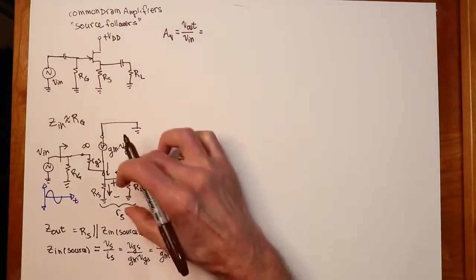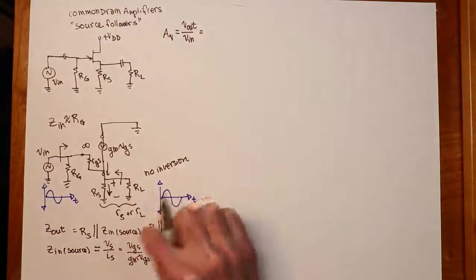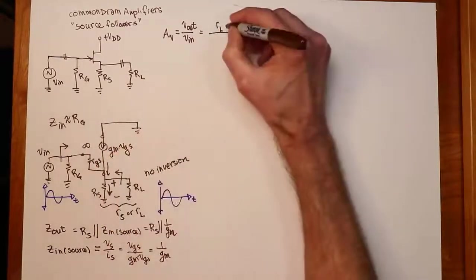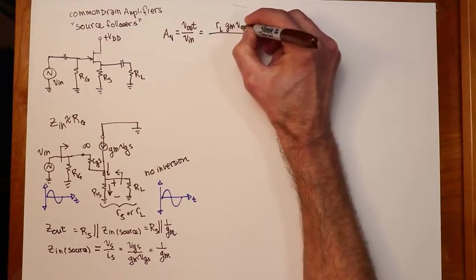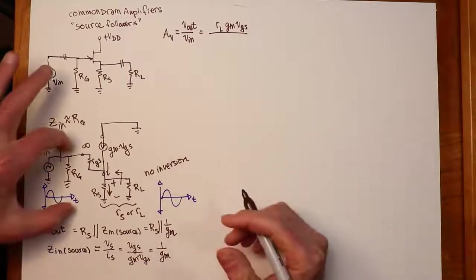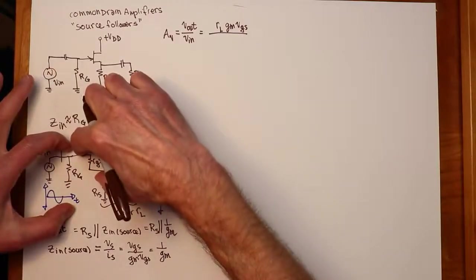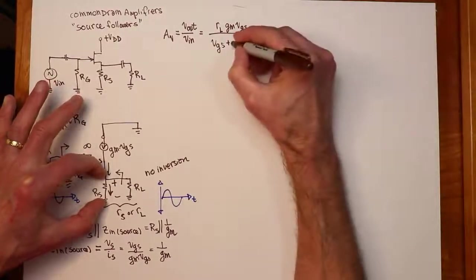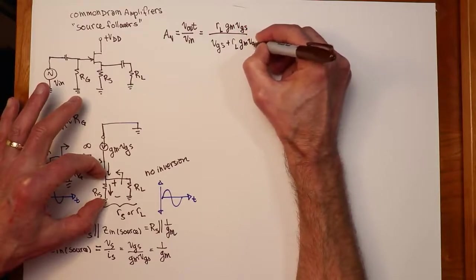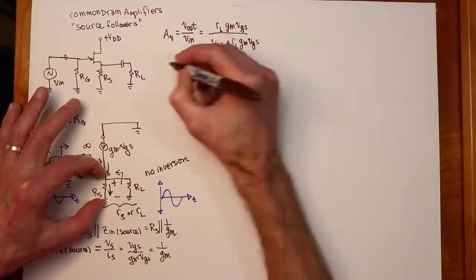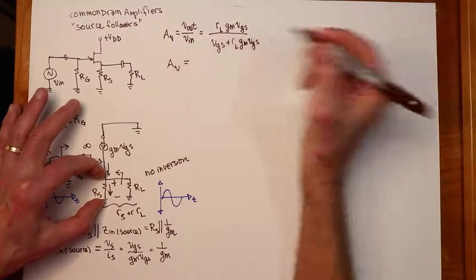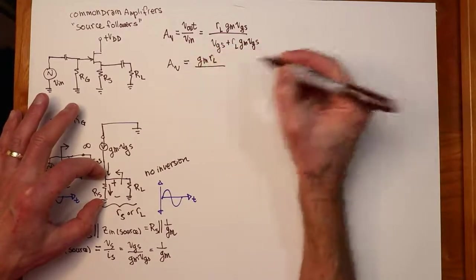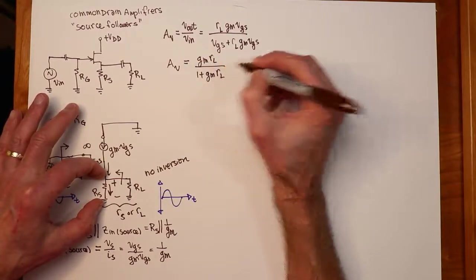The output voltage is just this. It's the drop across little RS or little RL, whatever you want to call it. So that's RL times the current through it, which is GM*VGS. What is the input voltage? The input voltage back here is VGS plus, quite literally, that same drop, RL times GM*VGS. You factor out the VGS, you can kill that, get rid of that.